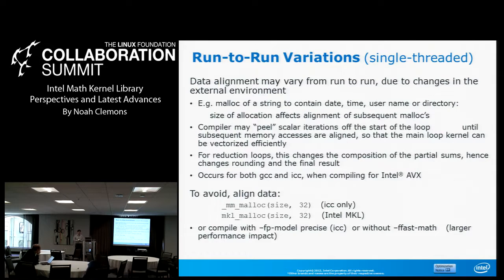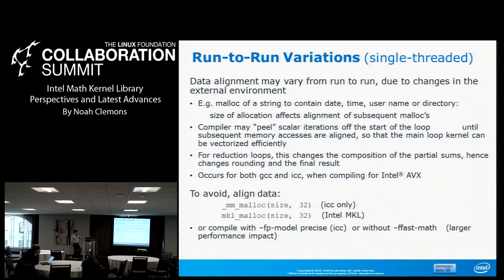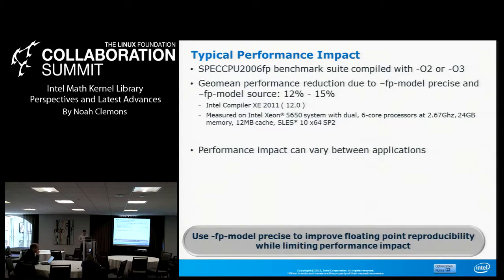Here's an example with FPModel precise: in a loop doing C plus a very tiny number, it would disable reassociation no matter what, and enforces C standard conformance from left to right. This may carry a significant performance penalty. Ways to alleviate run-to-run variations: data alignment may vary run-to-run due to changes in your memory environment — memory allocation can depend on date, time, user name, and directory. The compiler may peel off different iterations until memory accesses are aligned so the main loop kernel can be vectorized efficiently. To avoid these variations, we have Intel compiler memory allocation and MKL memory allocation, or compile with FPModel precise or without fast-math.